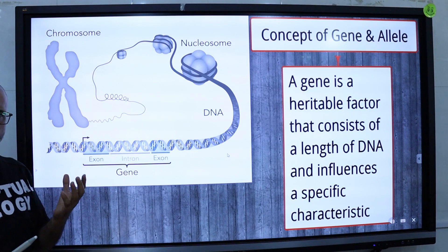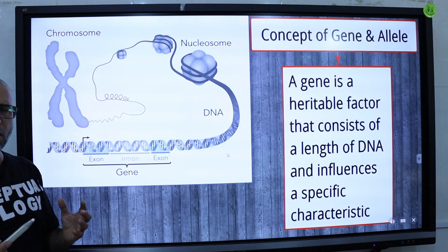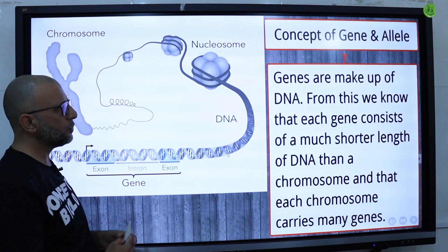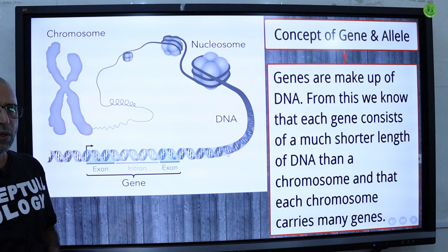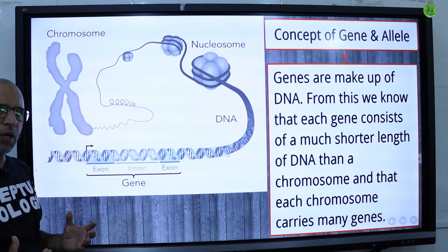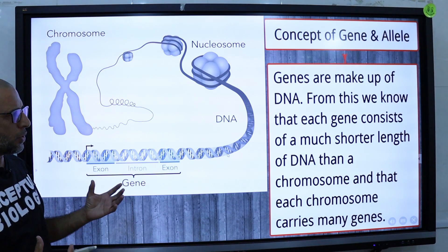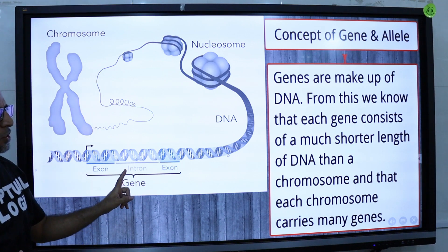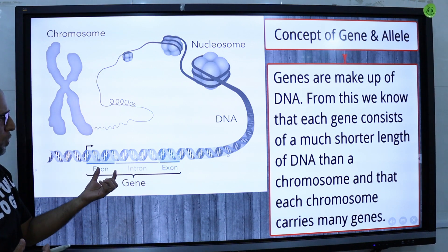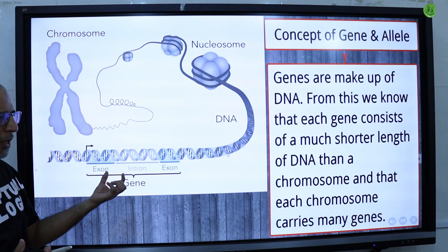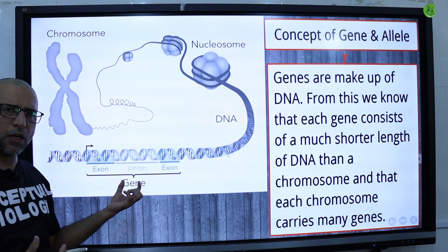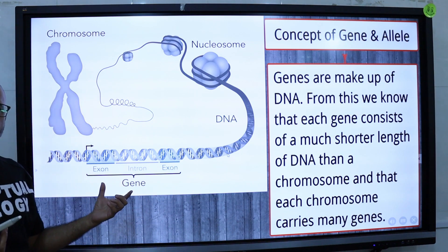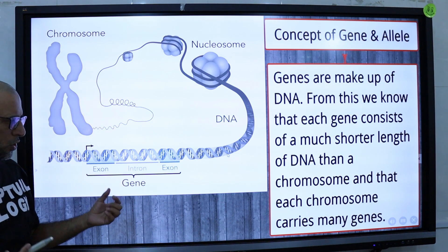A single strand of DNA contains thousands of genes. Some genes are small and some genes are large. Each gene consists of a much shorter length of DNA than a chromosome, so each chromosome carries many genes.